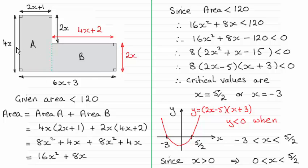As you can see, the area of A is 4x times (2x + 1), and the area of B is 2x times (4x + 2). Just expand this and you end up with 16x² + 8x. We know that area has to be less than 120, so I've written that as being less than 120.